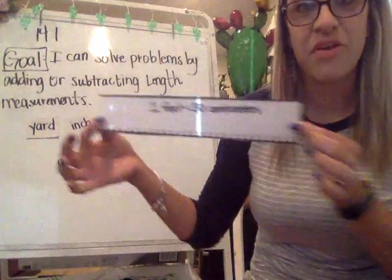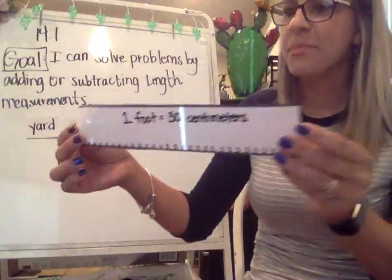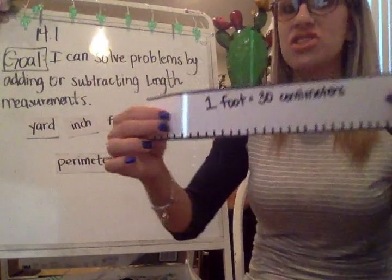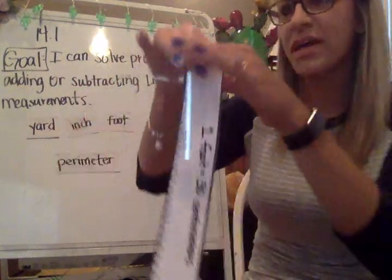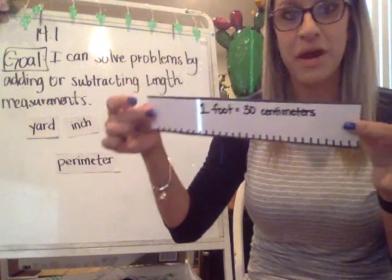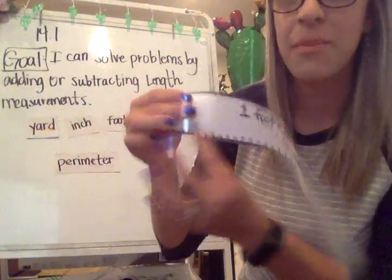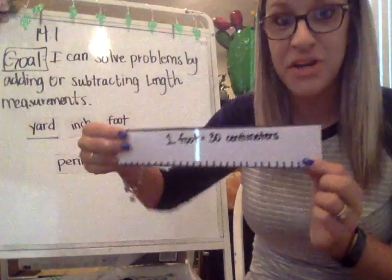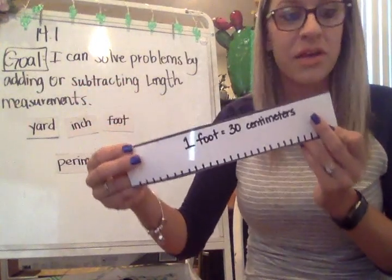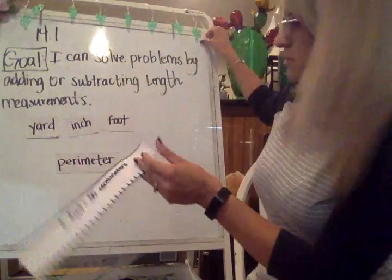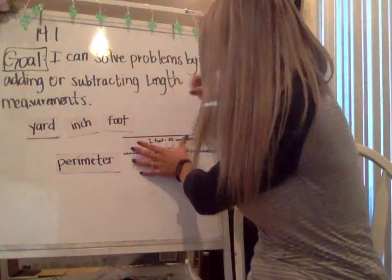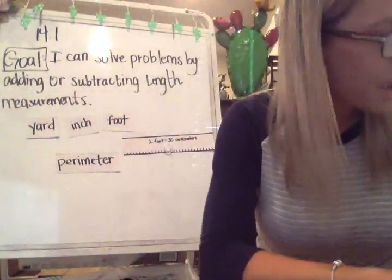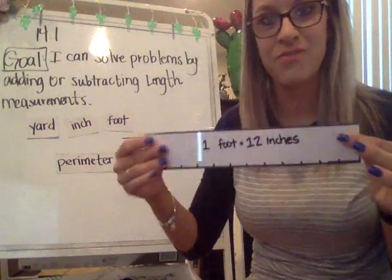So first I want to make sure that you understand the measurements of yards, inches, and feet. Here is an example of the measurement of a foot. It's not like your actual foot, but this is just a unit of measurement. So one foot is this length of this piece of paper right here. 30 centimeters make up this one foot.